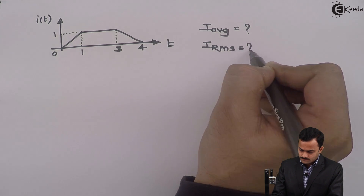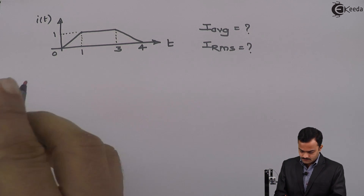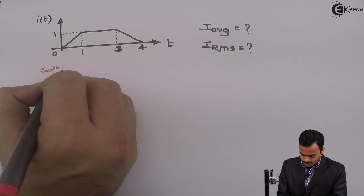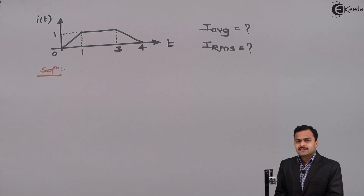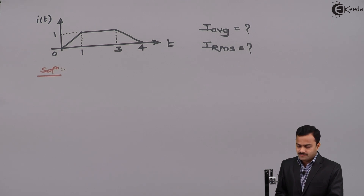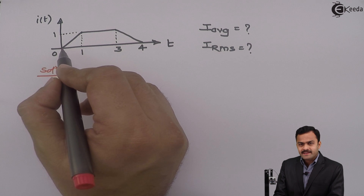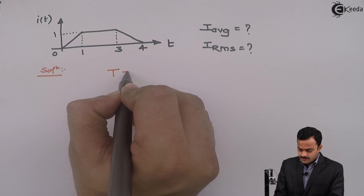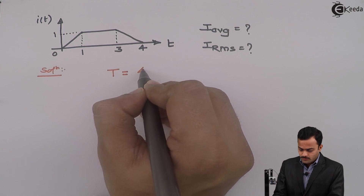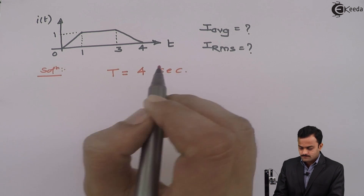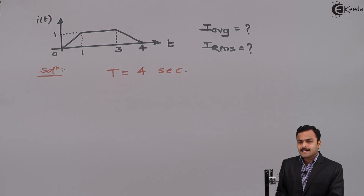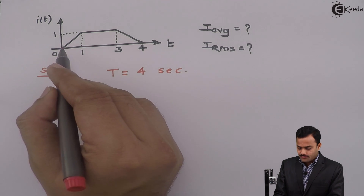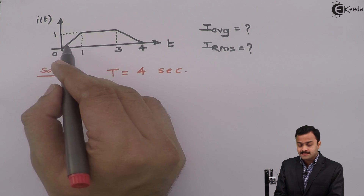Let's solve. As we discussed earlier, the first step is to find out a cycle and the time period. Here it's very easy — only one cycle is given, so I can directly say the time period T equals 4 seconds. The second part is writing the equation of this waveform, which extends from 0 to 4 and changes its shape several times.